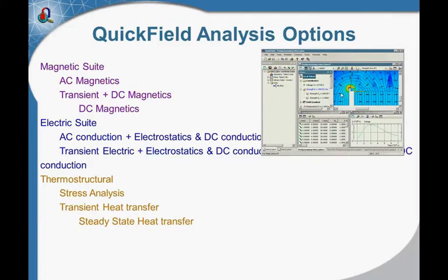We filled this finite element software with wide analysis capabilities. Our set of analysis options includes a magnetic simulation part for AC magnetics, DC magnetics, and transient magnetics problems. Electric analysis includes AC conduction, electrostatic, DC conduction, and transient electric options. We also have a thermostructural part which covers stress analysis, transient heat transfer, and steady-state heat transfer.